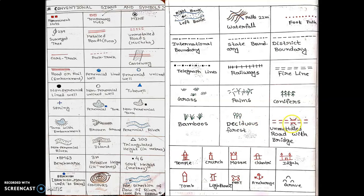An unmetalled road with a bridge is shown by two curved lines. Sometimes there is a question about why settlements are important for humans — you have to find the answer using these monuments and symbols.